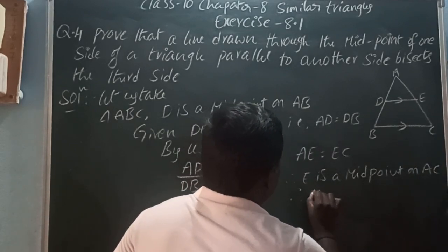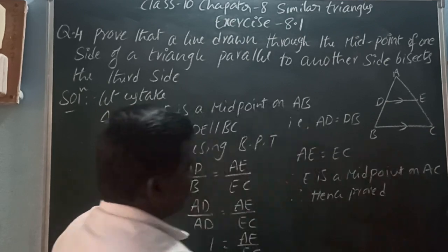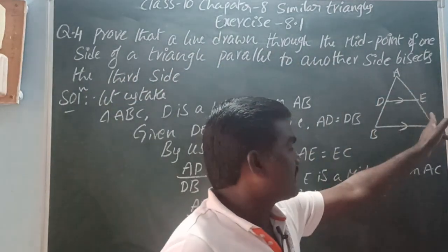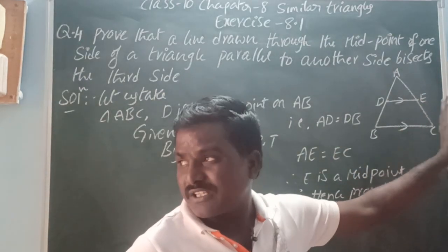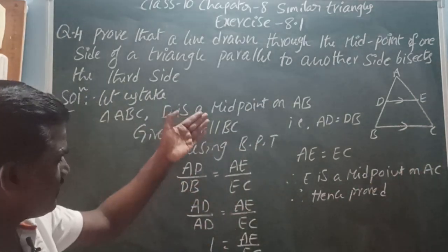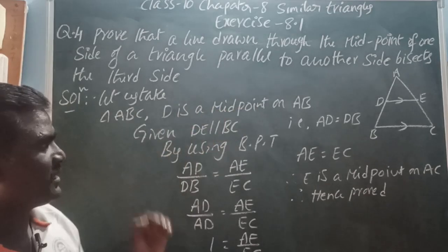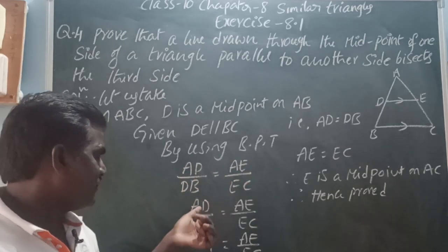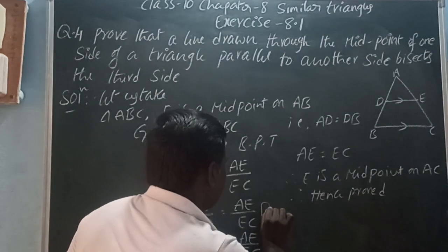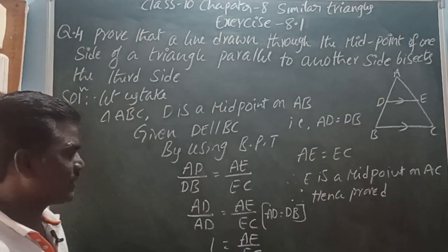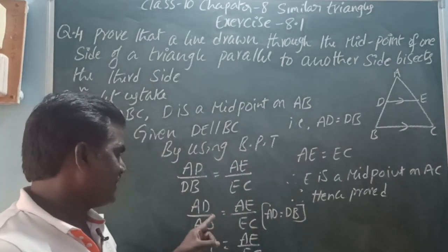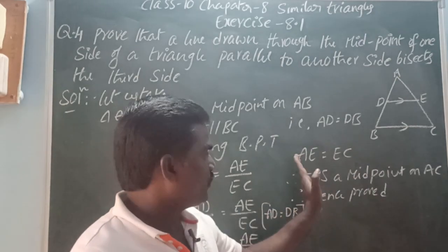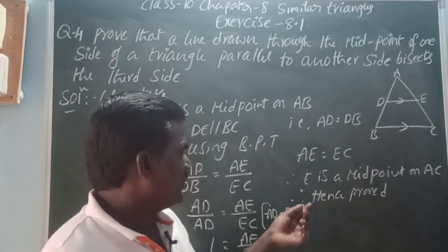Hence proved. What we are proving is that the line through the midpoint of one side of a triangle, parallel to another side, bisects the third side — meaning AE equals EC. In triangle ABC, D is the midpoint on AB and DE is parallel to BC. By BPT, AD/DB = AE/EC. Since D is a midpoint, AD equals DB, so AD/AD equals one, giving AE equal to EC. Therefore E is a midpoint on AC. Hence proved.